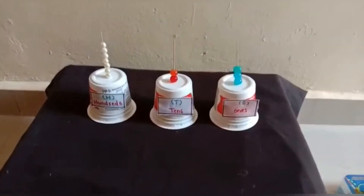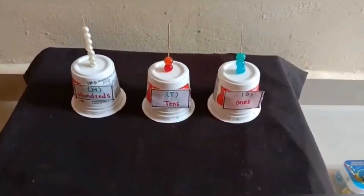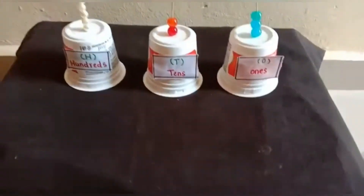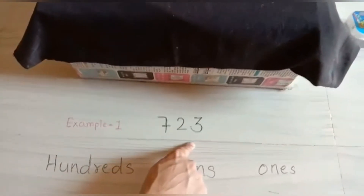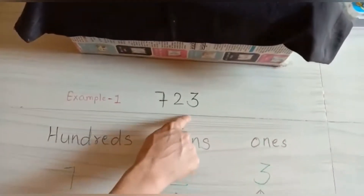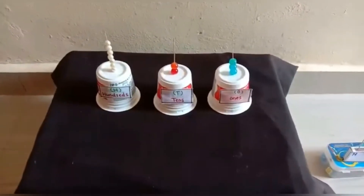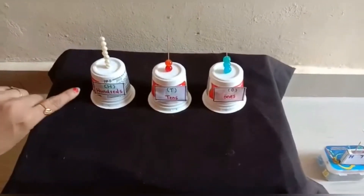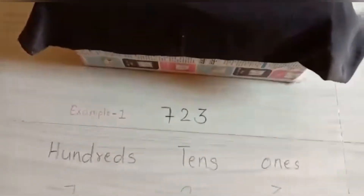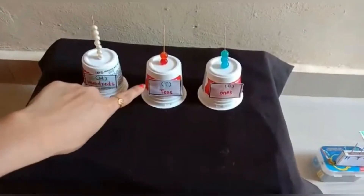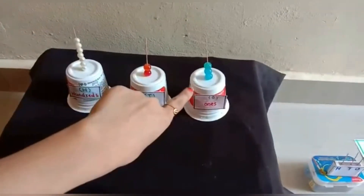We have completed this example. We have represented the number seven hundred and twenty three on an abacus. Here are seven beads which show seven hundred, and two beads which show two tens, meaning twenty.